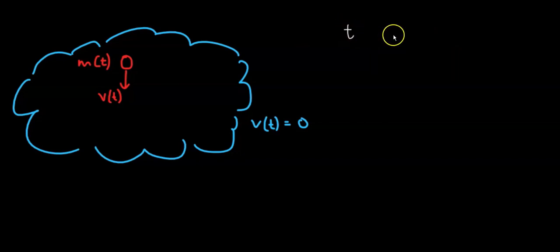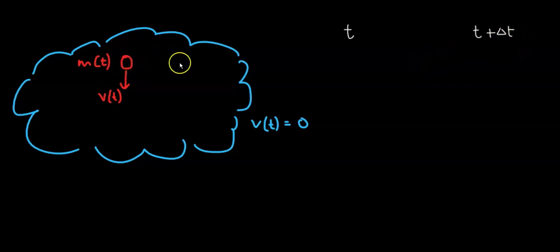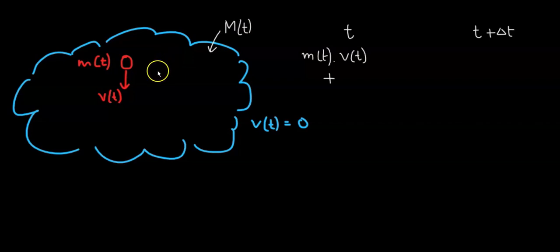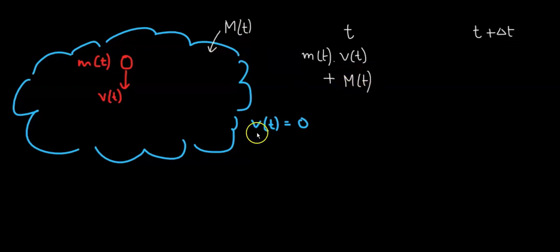We consider two timestamps: the initial time t and a later time t plus delta t — after a short period delta t. Initially, the raindrop has momentum m(t) times v(t). We also consider the cloud mass, also m(t), but since the cloud is stationary its velocity is zero, contributing zero momentum. So the initial total momentum of the system is simply m times v.